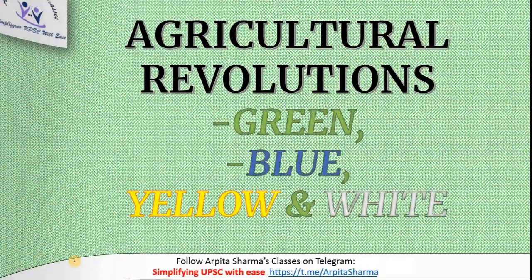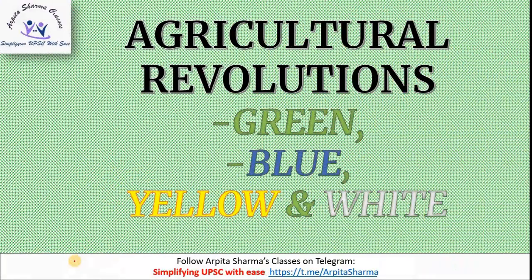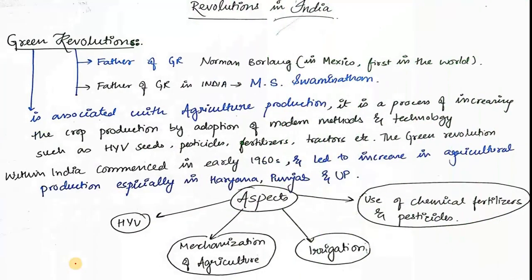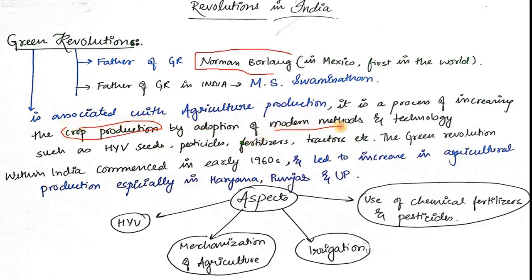Now let's talk about the revolutions — Green, Blue, Yellow and White. The father of the Green Revolution was Norman Borlaug, who first developed the concept in Mexico. In India, the Green Revolution was led by M.S. Swaminathan. The Green Revolution is associated with increasing crop production through adoption of modern methods and technology such as HYV seeds (high yielding variety seeds), pesticides, fertilizers, and tractors.